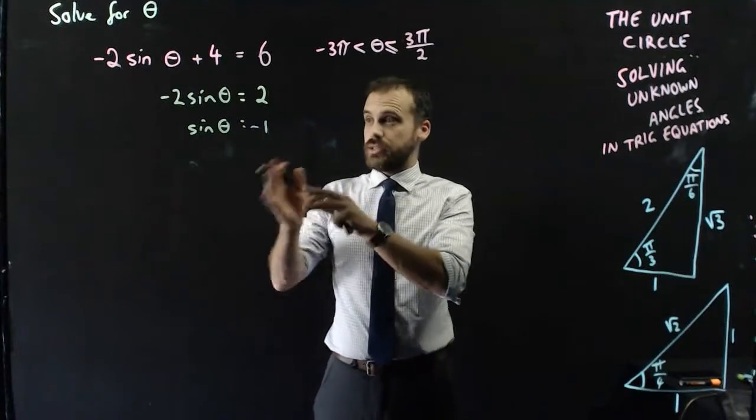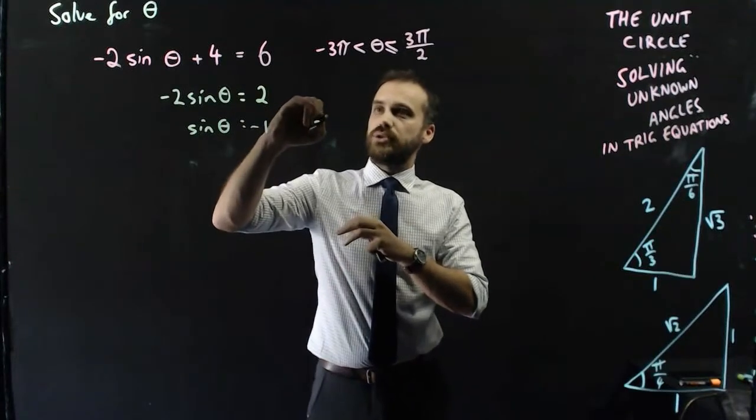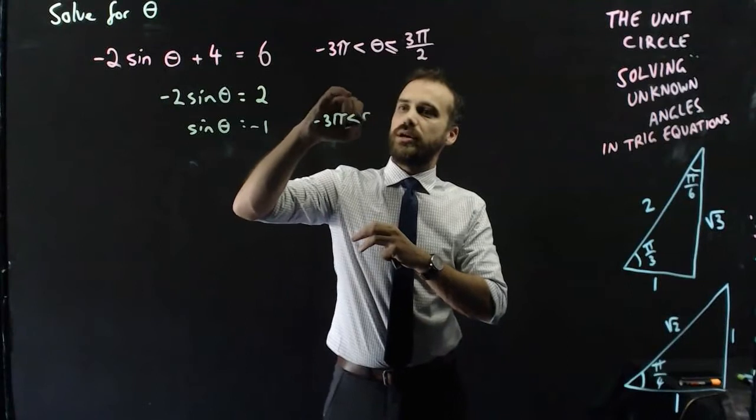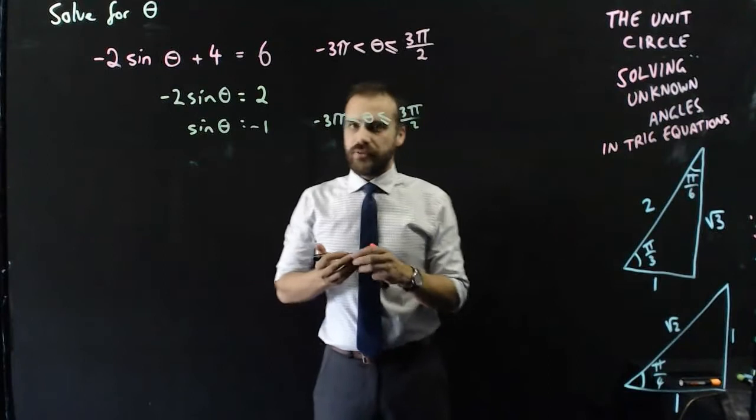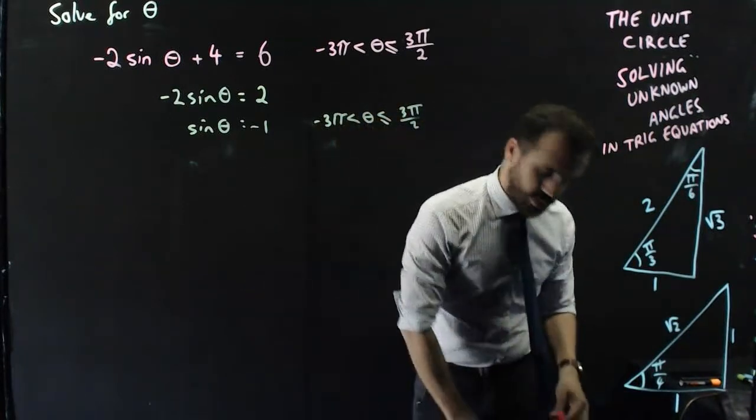Now, that question is sine theta equals negative 1 between negative 3π and less than or equal to 3π on 2. And from here, it's the same as any other question we've done.